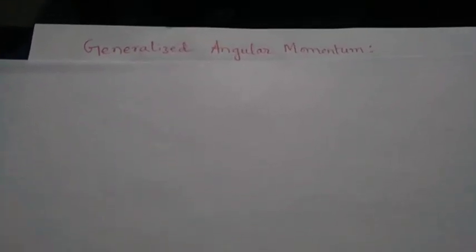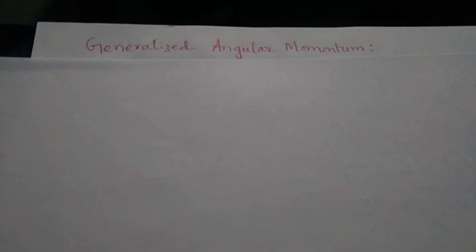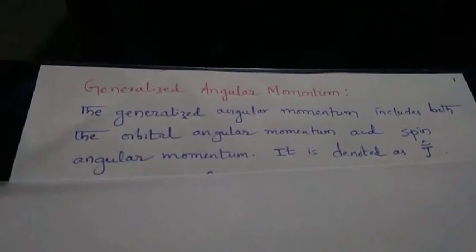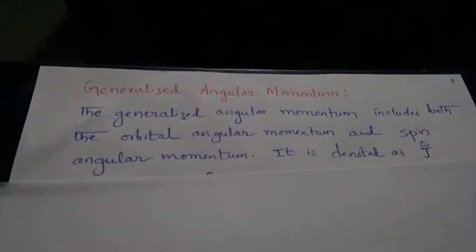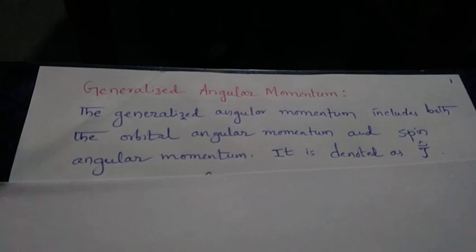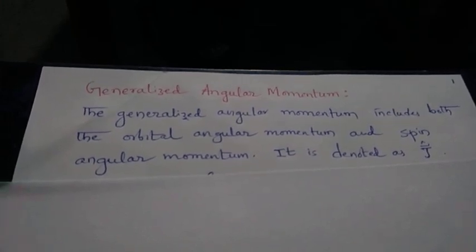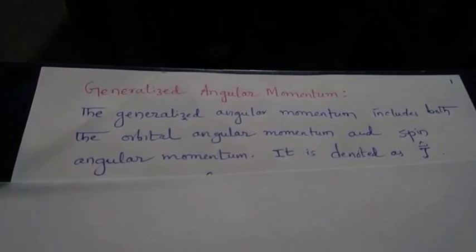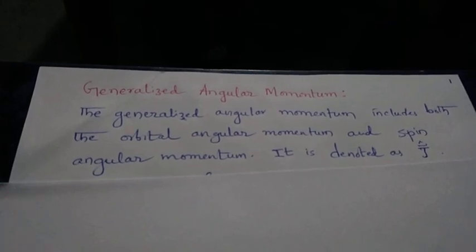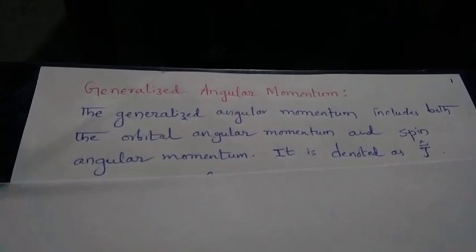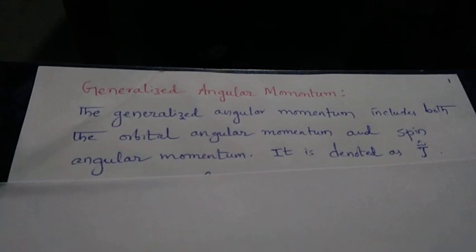The topic of the video is generalized angular momentum. The generalized angular momentum is denoted by J-hat and it is a summation of both the orbital angular momentum L and the spin angular momentum S.